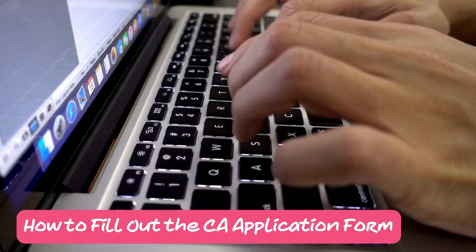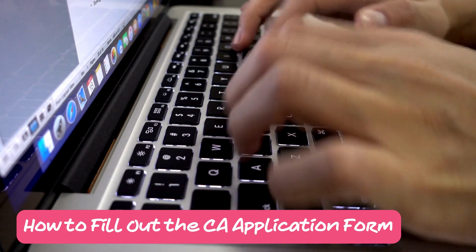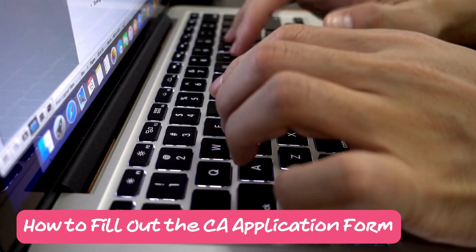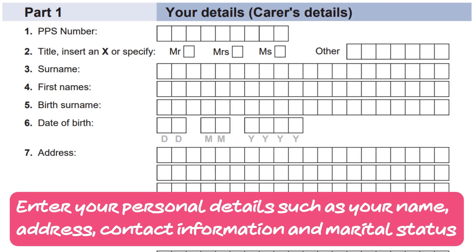How to fill out the Carers Allowance Application Form. Step 1: Enter your personal details, such as your name, address, contact information, and marital status.